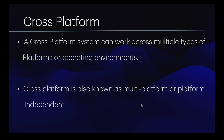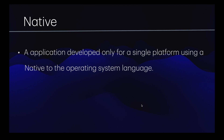Cross-platform development means developing code that can be executed on multiple platforms or operating environments — like a universal remote control for your development. You code once and it works everywhere, without needing to learn multiple languages for different platforms. Native development, on the other hand, is like going back to your hometown — it means creating an app tailored specifically for one platform using that platform's native languages and tools. For example, developing an Android app means being fluent in Java or Kotlin, knowing XML for UI design, and navigating Android Studio.